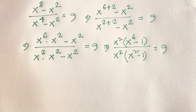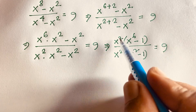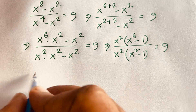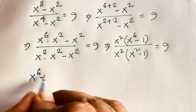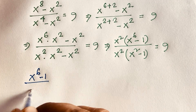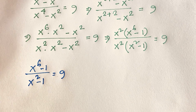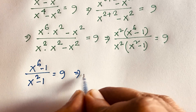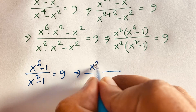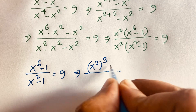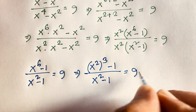So x squared and x squared cancel out. We find that (x to the power 6 minus 1) over (x squared minus 1) equals 9. Now x to the power 6 can be written as (x squared) to the power 3, minus 1, and here is x squared minus 1 is equal to 9.